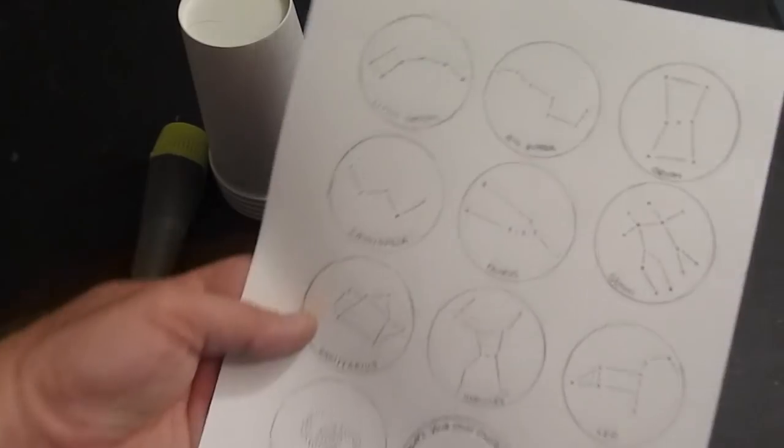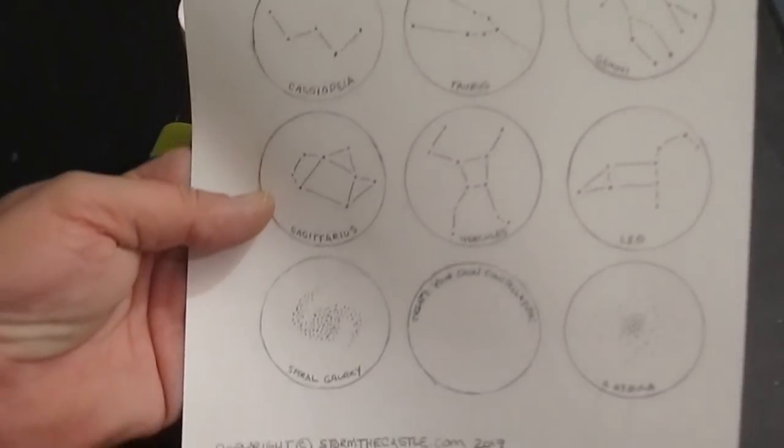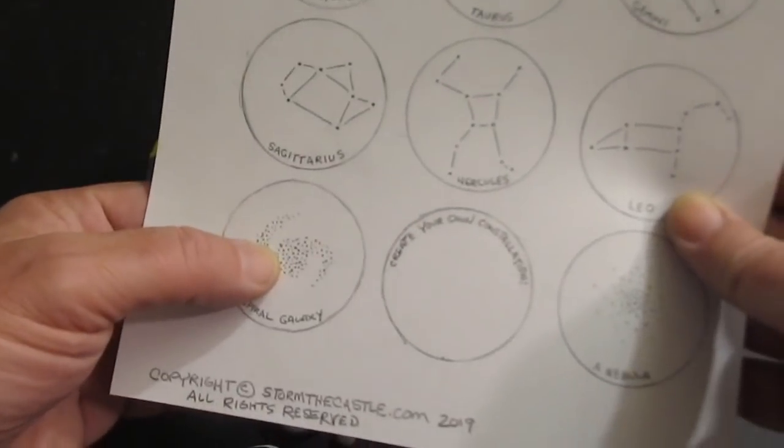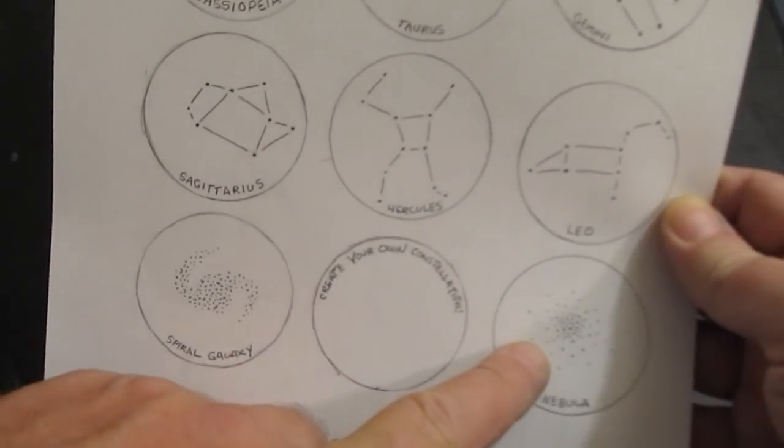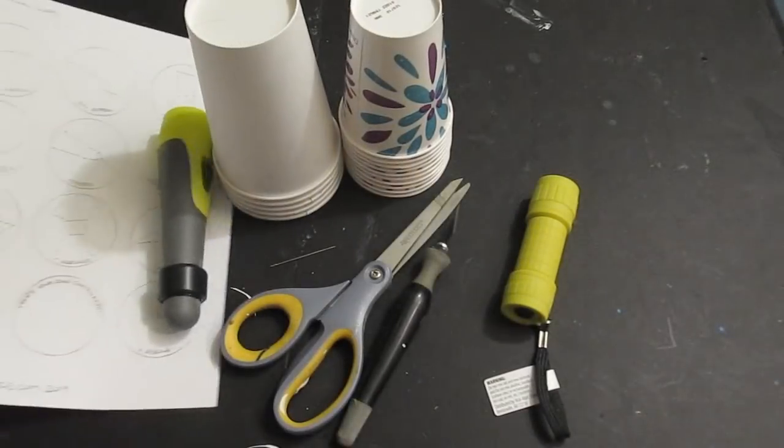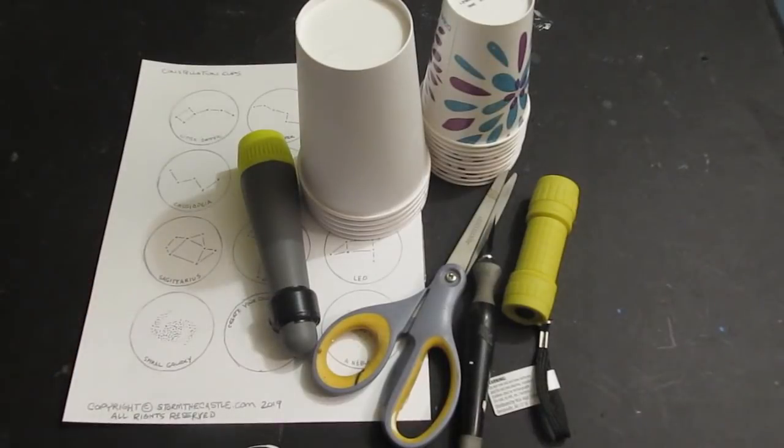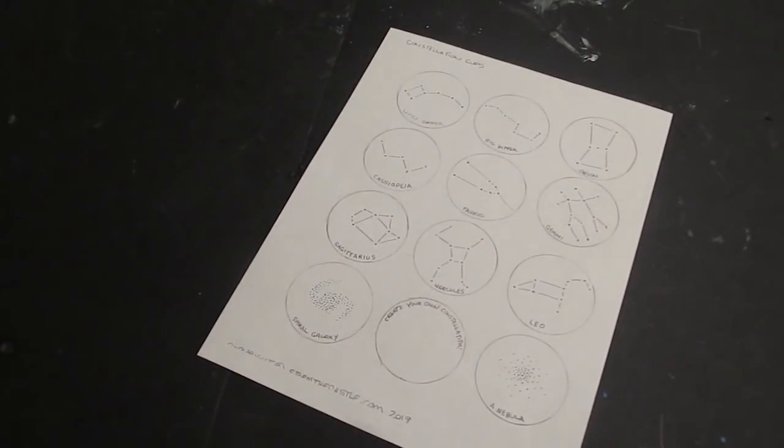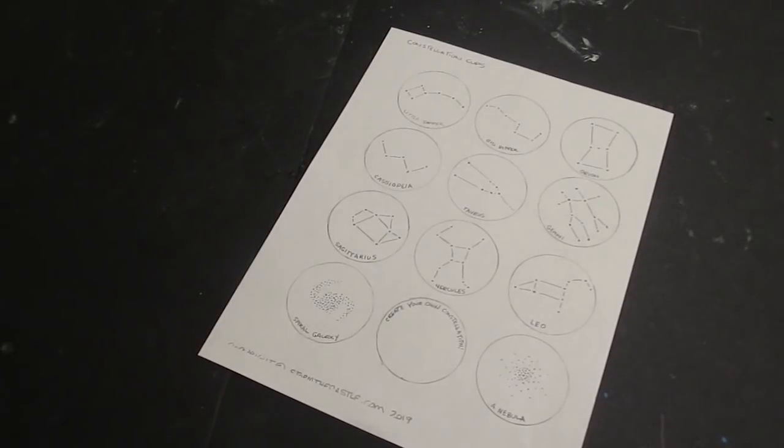And print up the templates for the constellations on my website. It's totally free. It's a PDF. You can print it out. Look. There's all constellations and even a blank one. You can make your own constellation. So I give you that. For some basic real constellations in the night sky. A fun project. So let's do it. Let's make it.